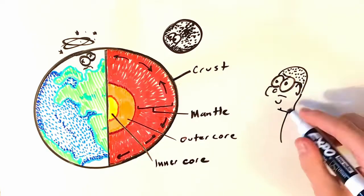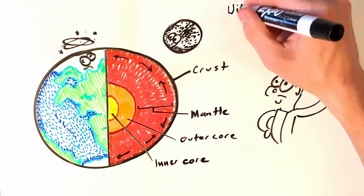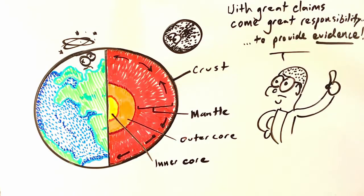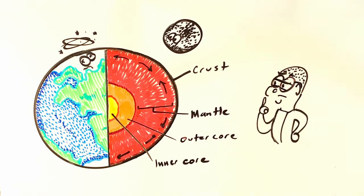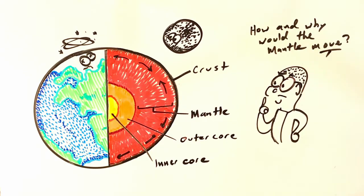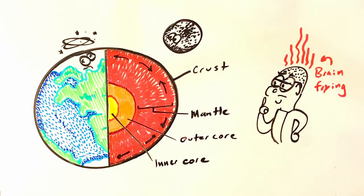And that mantle, you might have heard, is actually moving around. Now this is a pretty gutsy claim, and so it requires some gutsy evidence. But how do scientists even know this? You can't see the mantle, it's too deep. Why would it move in the first place? So today we're going to examine this bizarre claim and see what we can figure out.